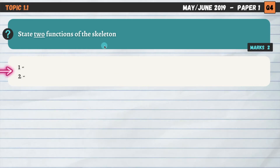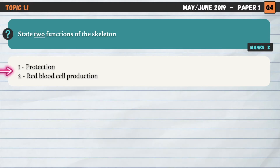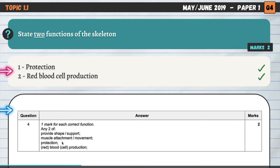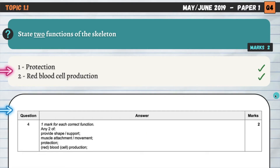State two functions of the skeleton. The command word state is essentially the same as name. A really simple question worth two marks — you really need to know the four functions of the skeleton. My example answer: protection and red blood cell production for two marks. The other two were shape or support and assisting with movement by providing muscle attachments, so that when muscles contract and shorten they create movement in the body.